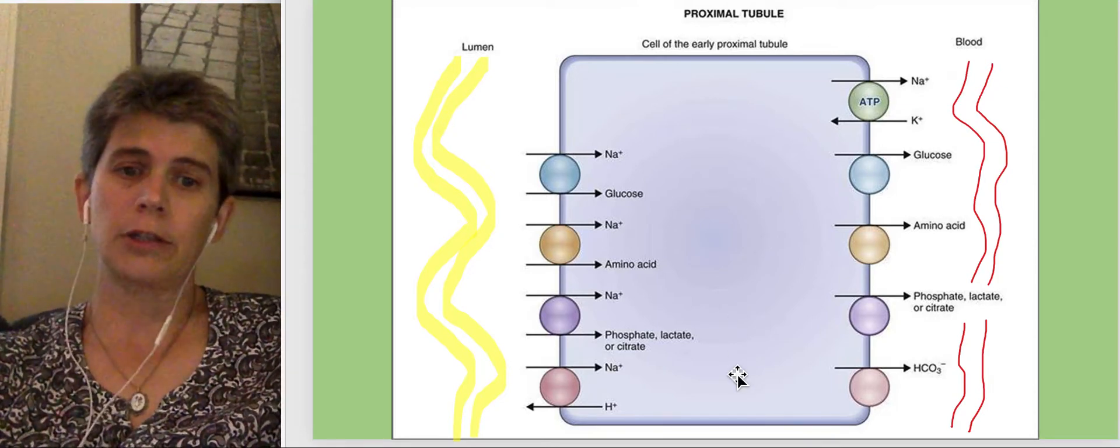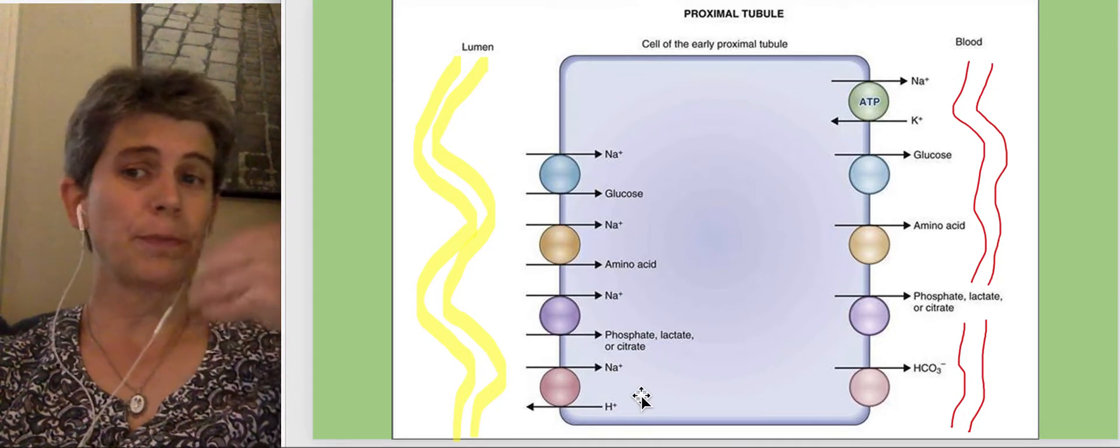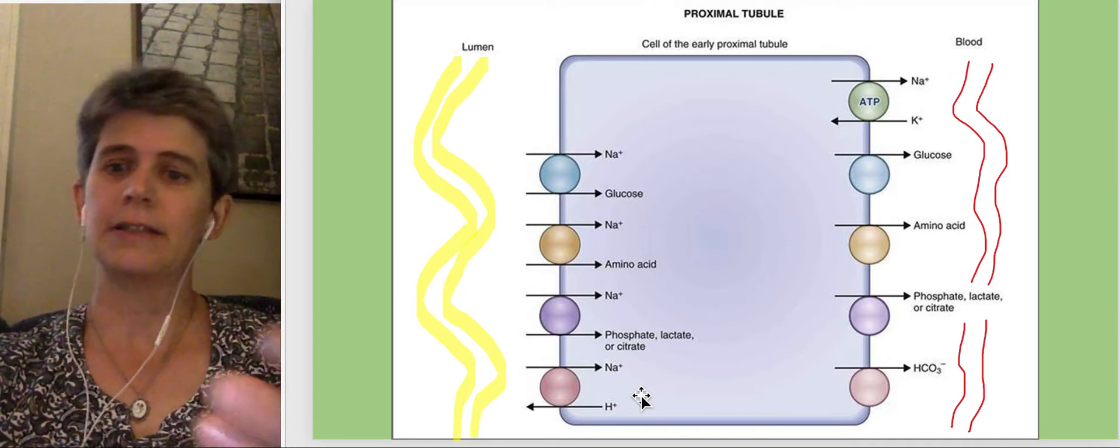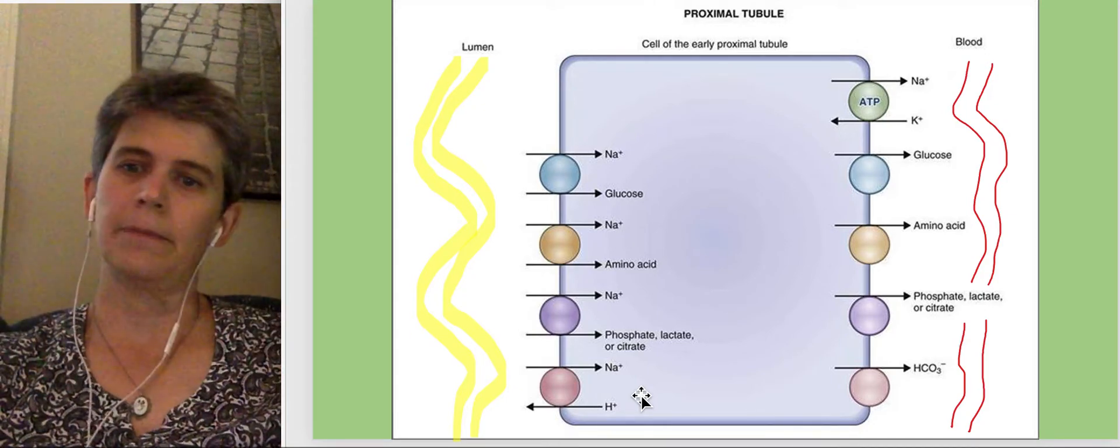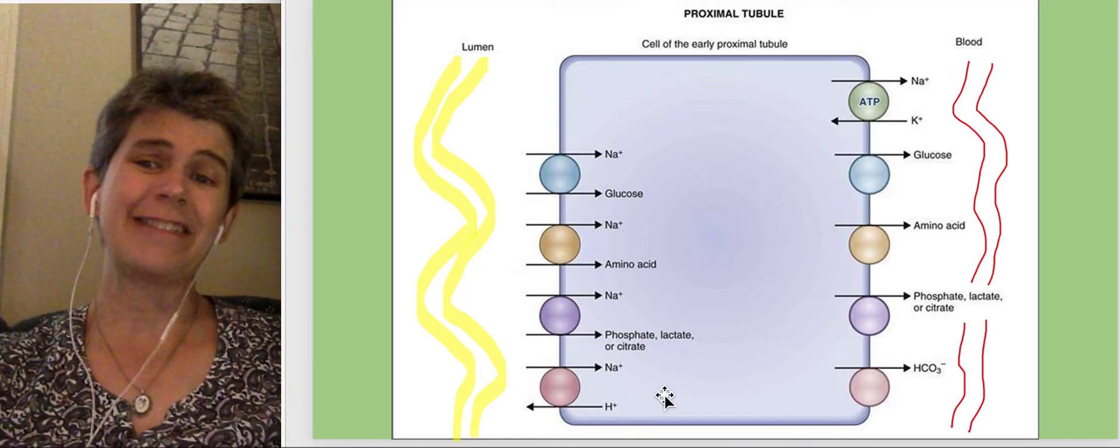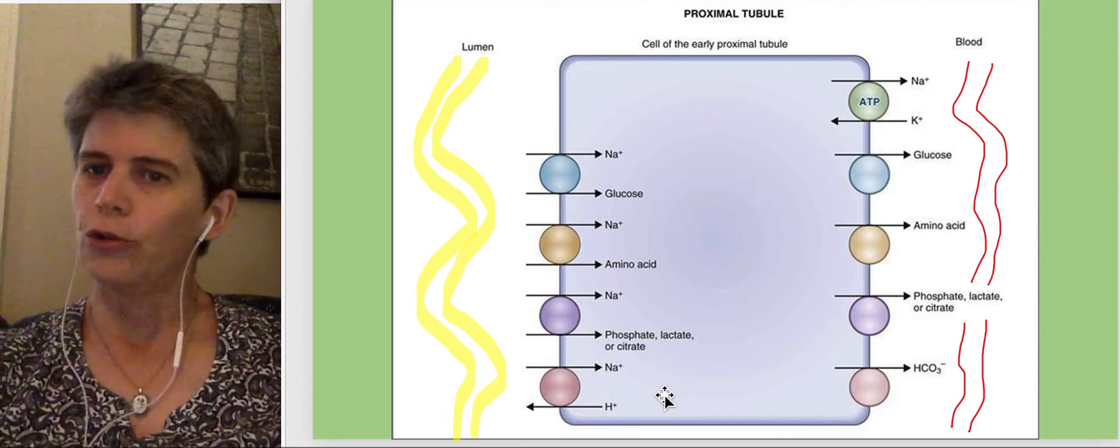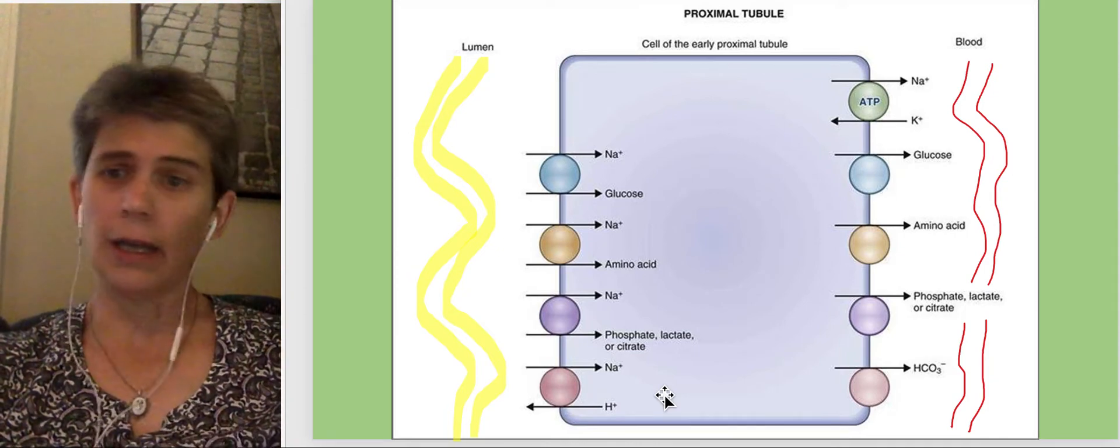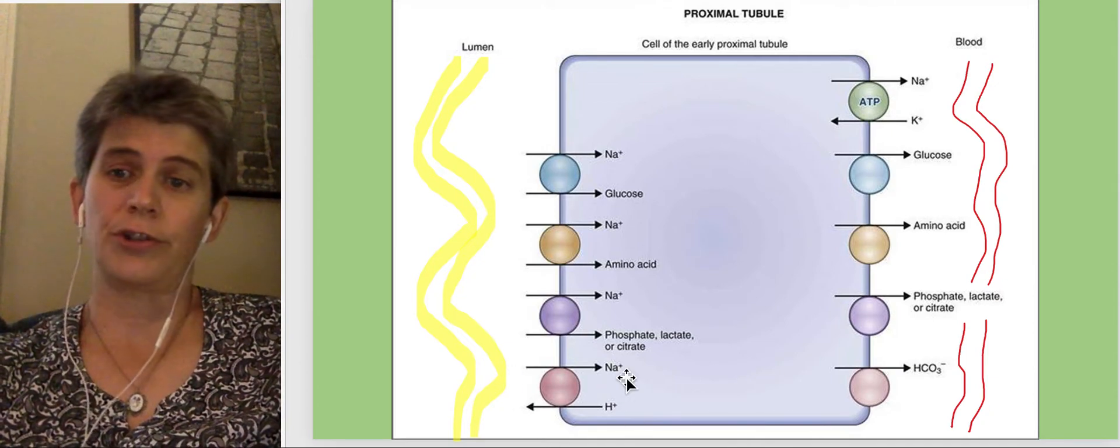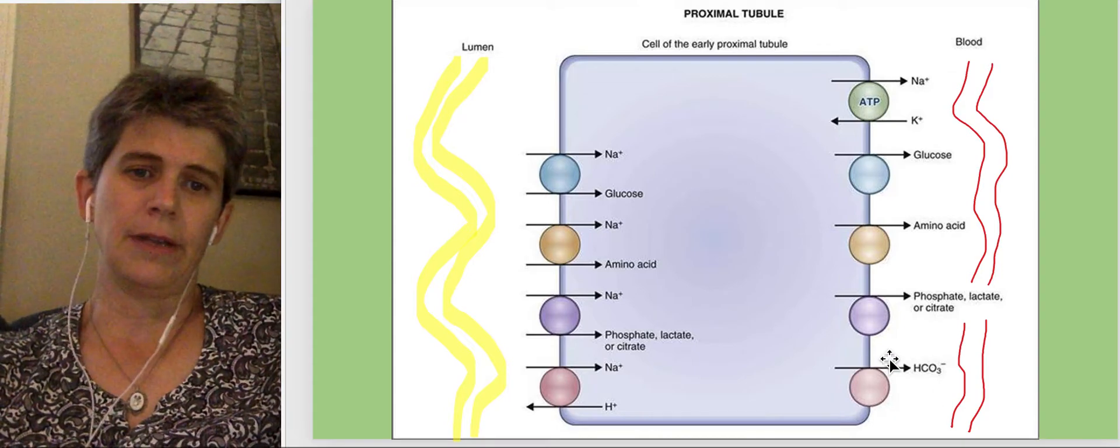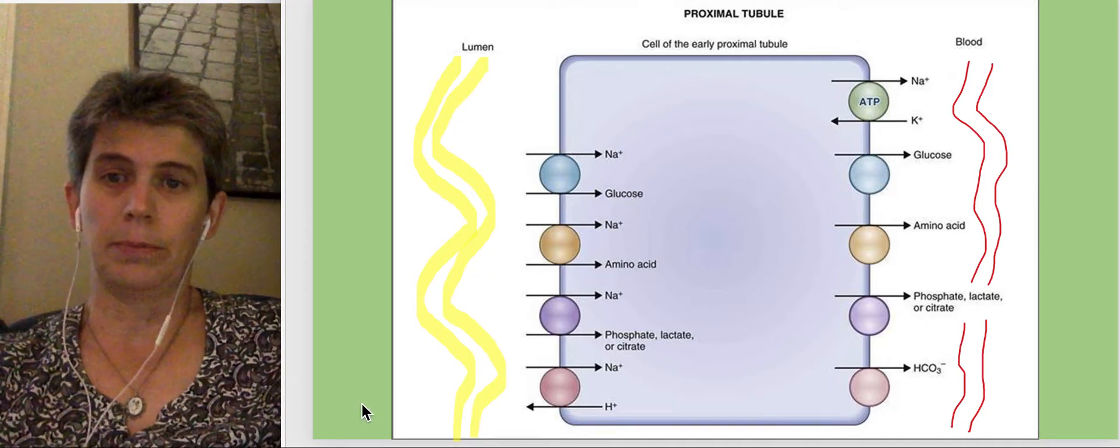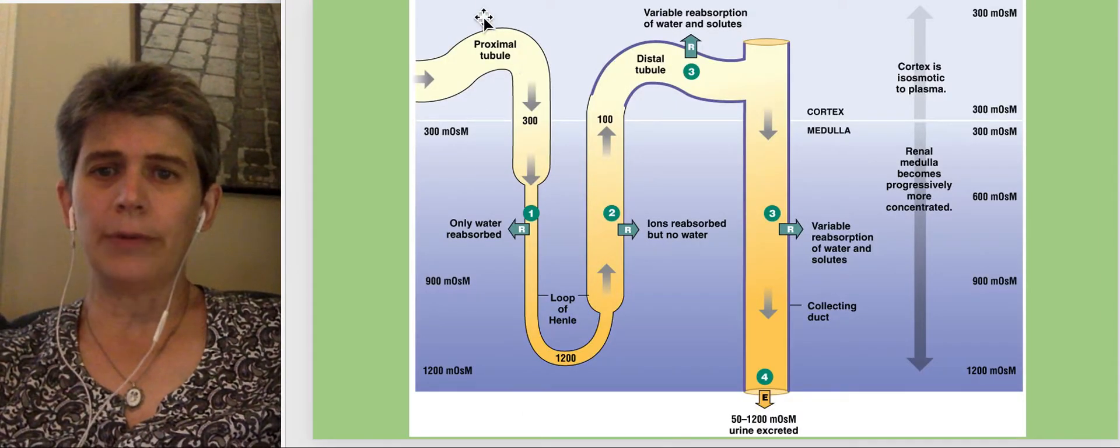The other thing that happens in the proximal tubule is that, remember that you're producing carbon dioxide continuously in aerobic respiration, and that turns into carbonic acid. And so we need to prevent our blood from becoming acidified. We need to get rid of acid basically continuously. This is regulated at the distal tubule, as we'll see. But in the proximal tubule, just knowing that we need to get rid of a lot of acid in our blood as the default state, we see the removal or secretion of acid here, and the reabsorption of bicarbonate, which is going to buffer the acid that remains in the blood.